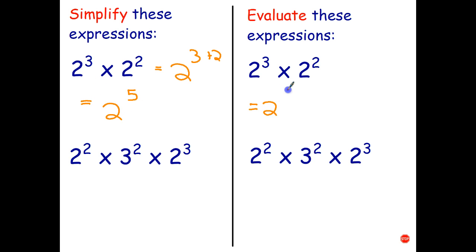And then what we have to do is turn that into a number. So I'm going to do this one in my head. I've got to multiply 5 twos together. 2 times 2 is 4, times 2 is 8, times 2 is 16, times 2 is 32.